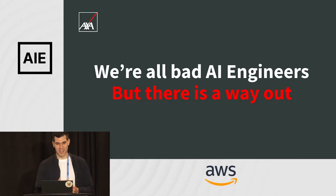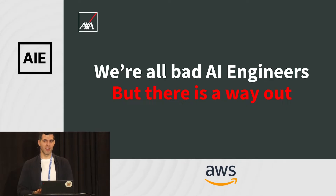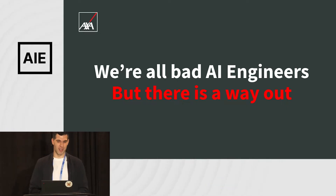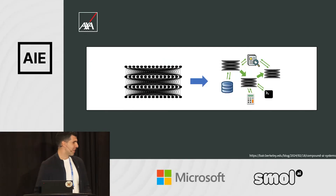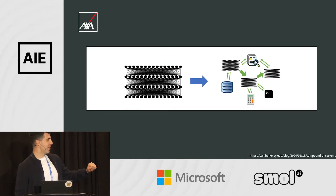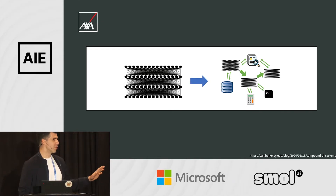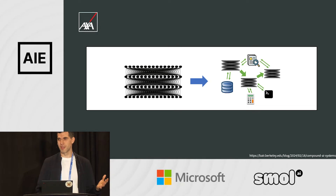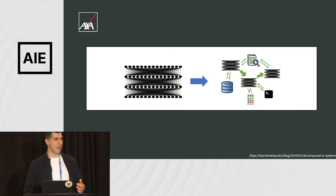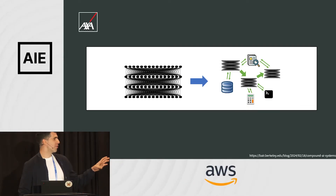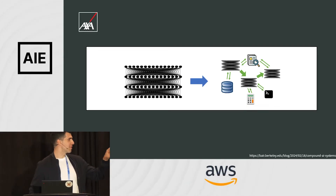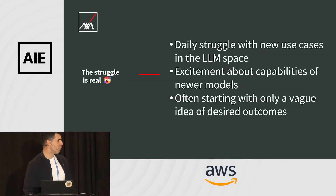We are engineers. We have to reconsider what we are doing these days — which is prompt engineering — and start programming AI systems again. On the left, we have this huge neural network model, but neural networks on their own, whether language models or any other AI model, are not useful on their own. They are only useful when considered as part of a larger system.